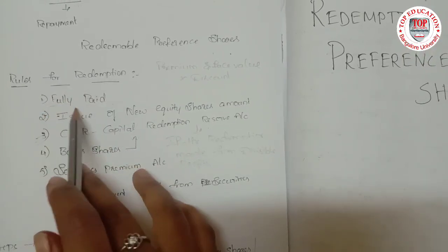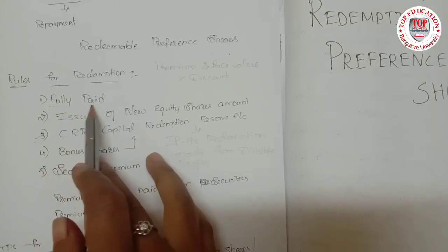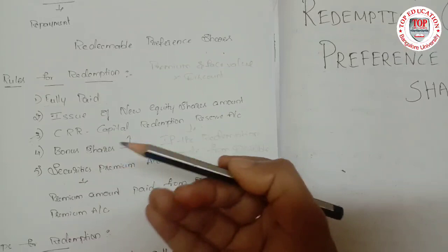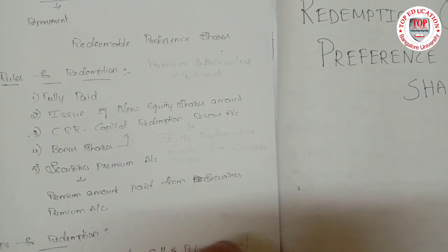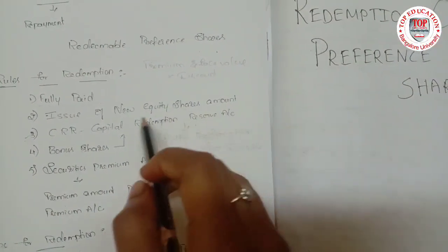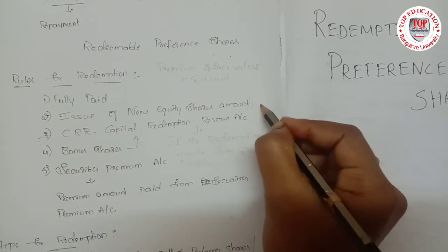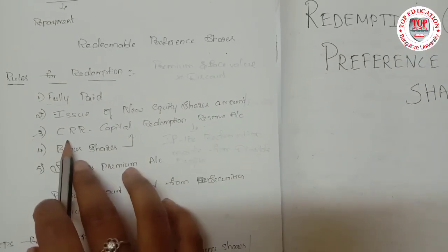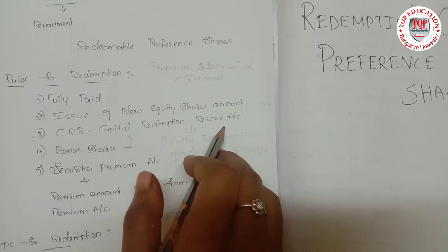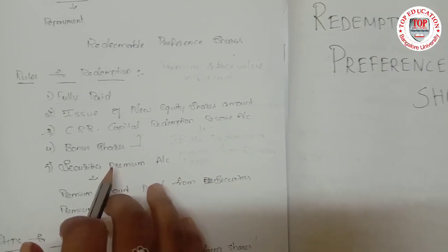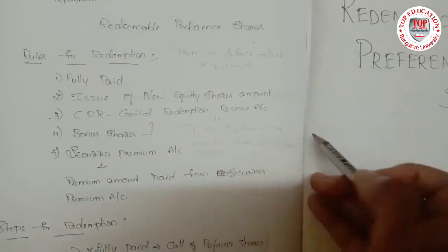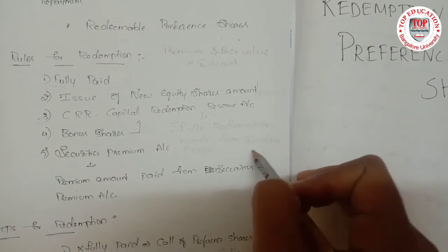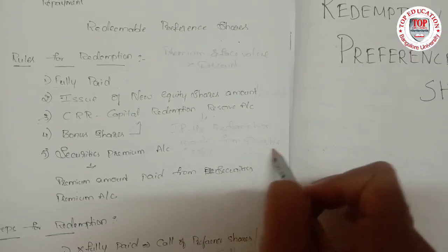The first rule for redemption of preference shares is that the shares to be redeemed must be fully paid. The second rule is that we can redeem preference shares using the amount received from the issue of new equity shares. The third rule is the creation of a Capital Redemption Reserve account.